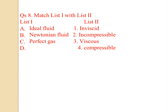Match List 1 with List 2. List 1: (a) ideal fluid, (b) Newtonian fluid, (c) perfect gas. List 2: (1) inviscid, (2) incompressible, (3) viscous, (4) compressible. Ideal fluid is inviscid and incompressible. Newtonian fluid is viscous and compressible. Perfect gas is compressible but inviscid — matched to 1 and 4.